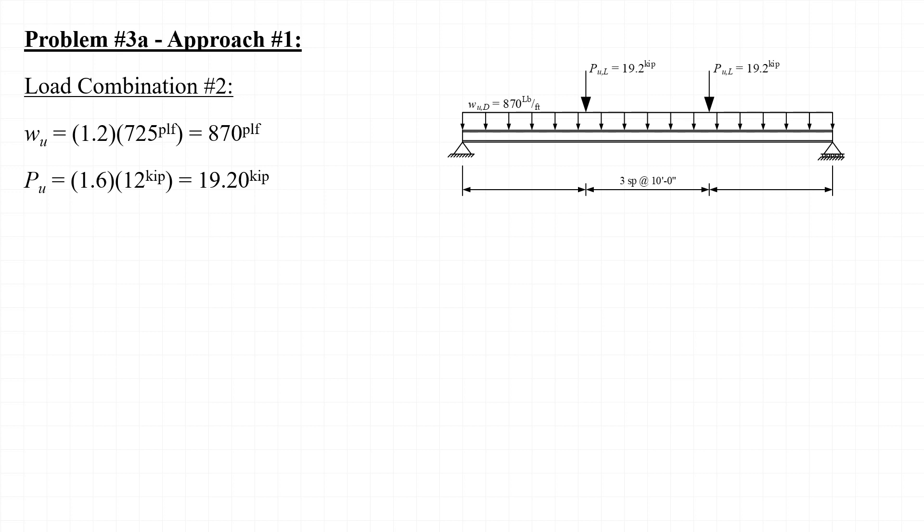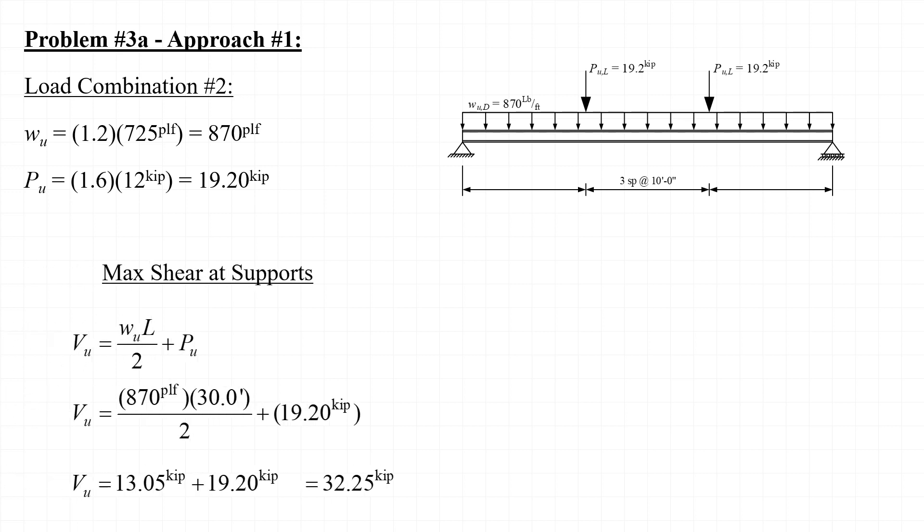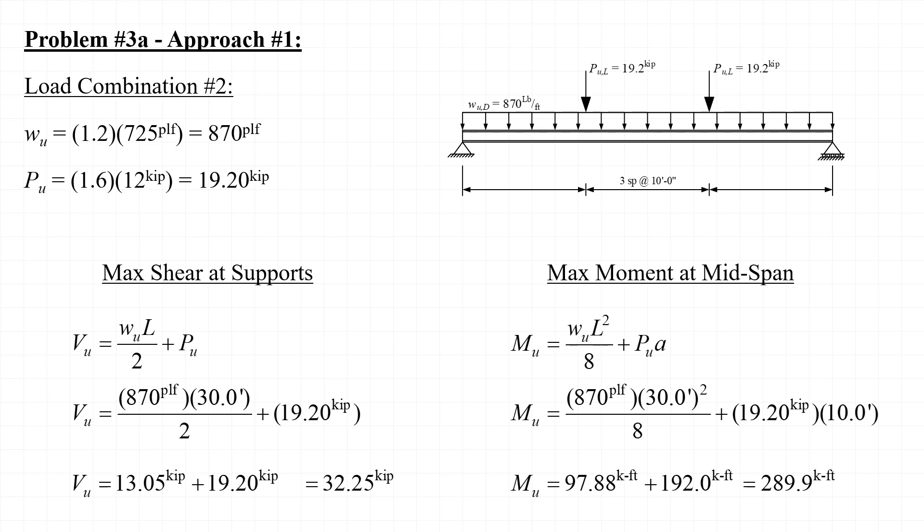Considering the factored loading from load combination number 2, we can apply the equations from the AISC beam tables to determine the maximum factored shear V sub U and the maximum factored bending moment M sub U. The values calculated using these equations match the values we determined by drawing shear force and bending moment diagrams.